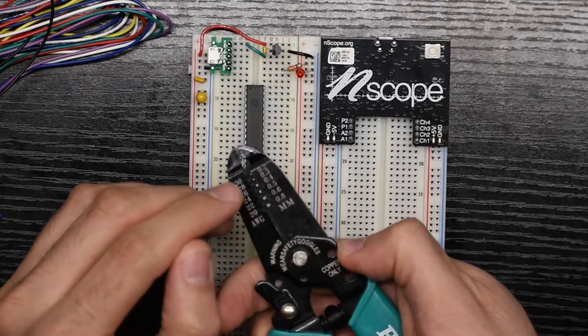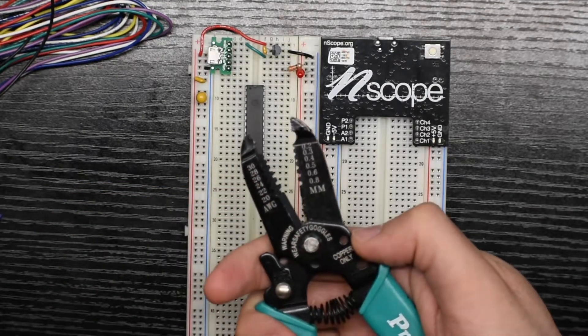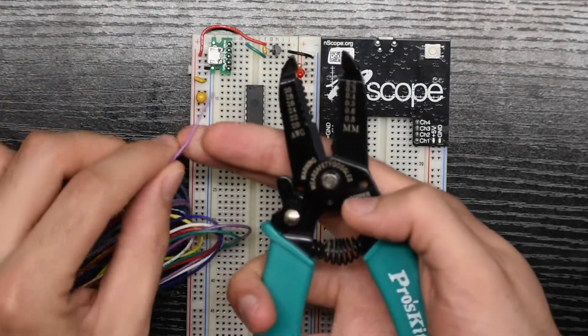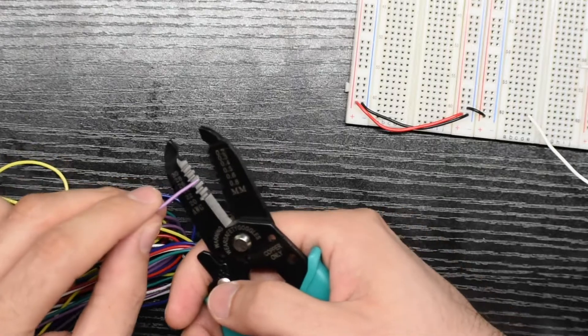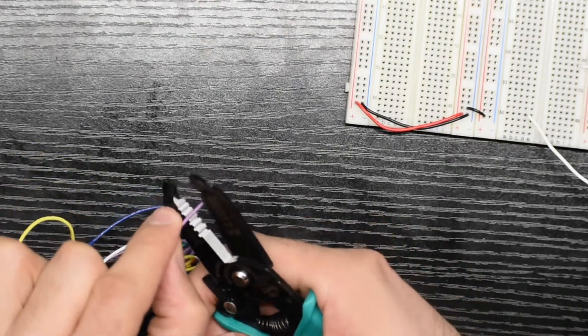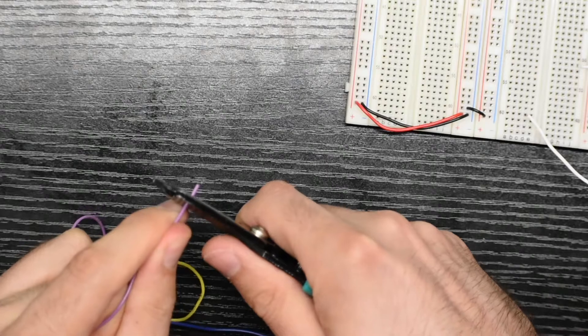The holes are different sizes for different size wire. The wire I provide in my kits is usually 26 gauge, so that means you should be using the 26 size hole to remove insulation. So you would put it in the size 26 hole, clamp down, and pull.